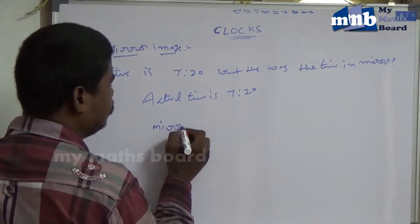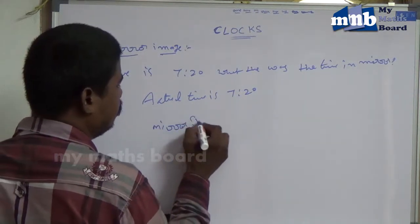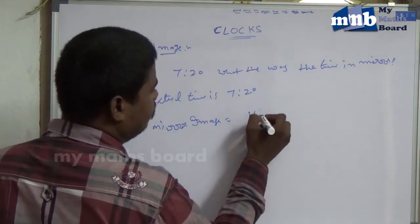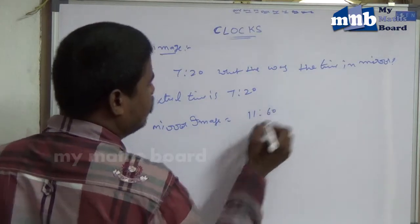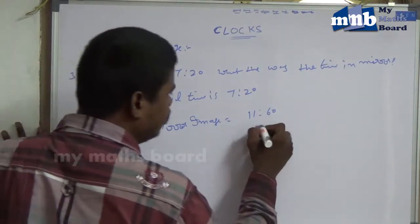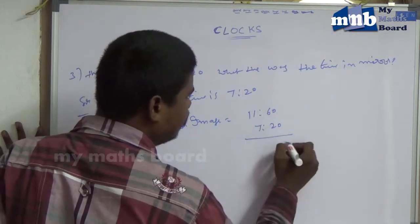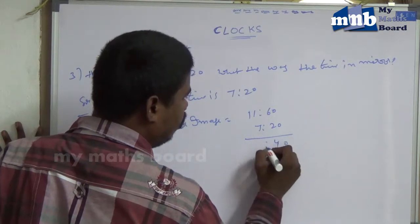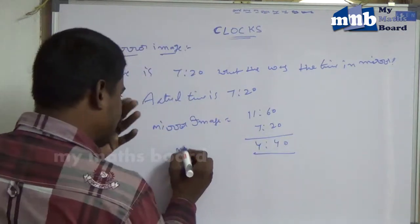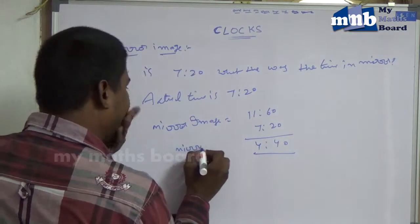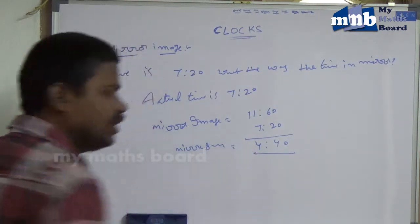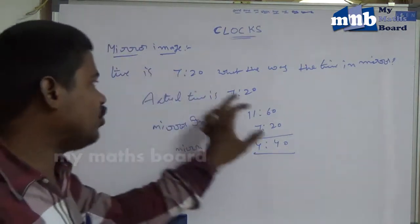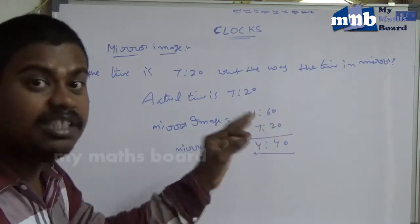Mirror image. You can subtract from 11 hours 60 minutes. Take 7:20 — subtract it from 11:60. The mirror image is 4 hours 40 minutes. Simply subtract the given actual time from 11 hours 60 minutes.